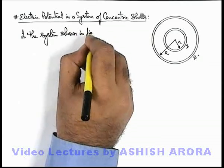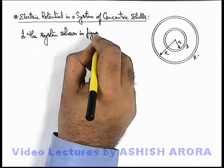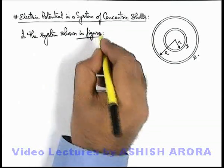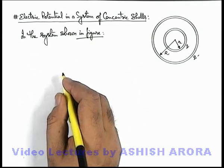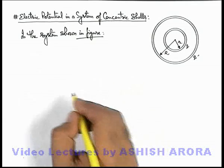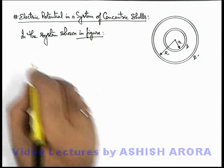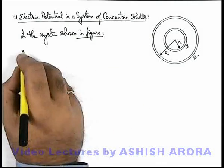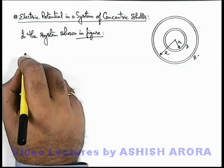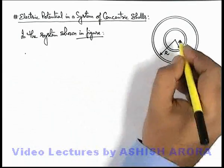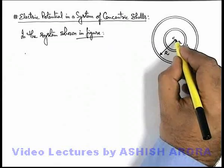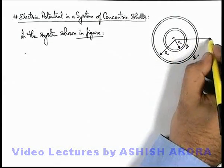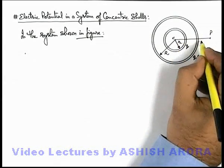Here we will discuss how we apply the calculation of electric potential due to metal shells or uniformly charged shells. Consider a point located at a distance x from the centre of the shells, which is outside of the system — say this is a point P located at a distance x.